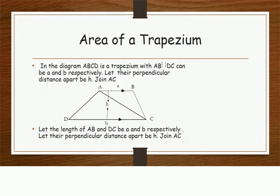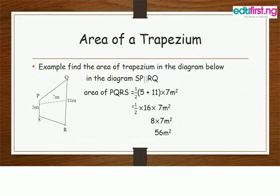Now area of a trapezium. In the diagram ABCD is a trapezium with line AB and line DC parallel. Let the length of AB and DC be A and B respectively. Let the parallel lines be a distance H apart. Join AC.